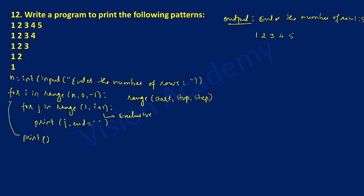Now i is 4, so the inner for loop again starts from 1. It prints 1, then 2, then 3, and then 4. This is because i is 4, so 4 plus 1 is 5 which is exclusive, meaning it stops at 4. Then the print statement executes again and the cursor comes down to the next line.